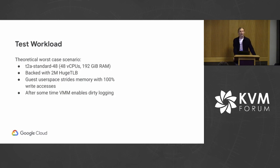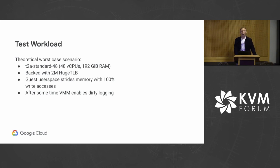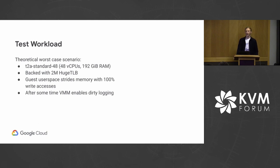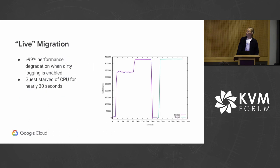To characterize the worst case scenario, we built a test workload. We chose our largest VM: a 48 vCPU VM with 192 gigs of RAM, backed with 2 meg huge pages. We put a userspace in it that runs a simple thread on all cores, doing as many writes as possible to memory striding per page size granularity. We first allow it to pre-populate memory, and then after reaching steady state, we enable dirty logging and measure how quickly the guest can continue to dirty memory.